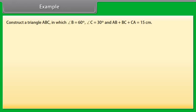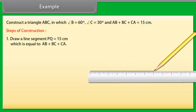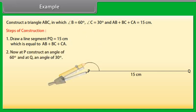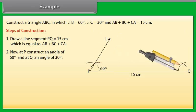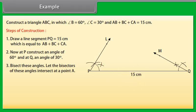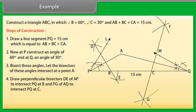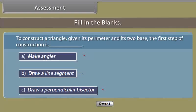Let us now look at one example: construct a triangle ABC in which angle B is 60 degrees, angle C is 30 degrees, and AB plus BC plus CA equals 15 cm. First, draw a line segment PQ equal to 15 cm. At P construct an angle of 60 degrees and at Q an angle of 30 degrees, then bisect these angles. Let the bisectors intersect at point A. Draw perpendicular bisectors DE and FG to intersect PQ at B and C. Join AB and AC. Then ABC is the required triangle.